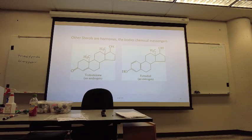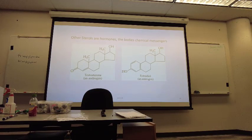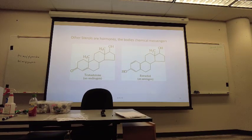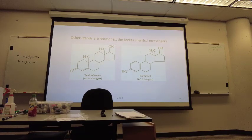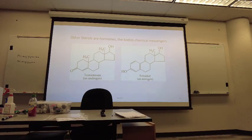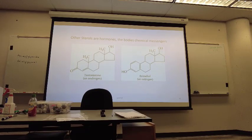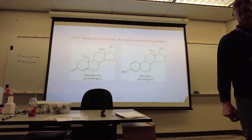Here are other sterols. See the similarity — lots of rings. These are unique: they have alcohols, and this one also has a ketone group — C double bond O with hydrocarbons on each side. These are actually hormones, which are chemical messengers that tell the body to do something. The famous ones are estradiol and testosterone. They're all part of the sterol group. Sterols have the rings and the alcohol group in them. Cholesterol is structural for the cell wall; estradiol and testosterone are chemical messengers, hormones.